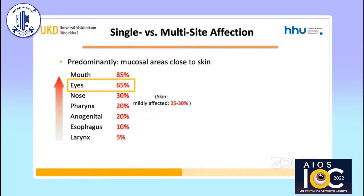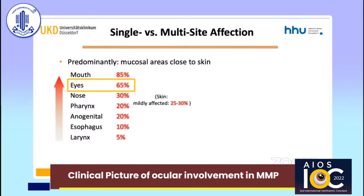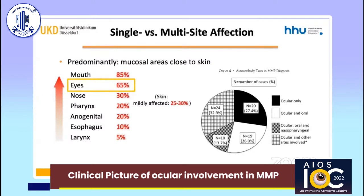Involved mucosal areas are generally in close contact with the skin. The skin itself is almost always only mildly affected. Oral involvement is most common, followed by ocular involvement in around 70%. Ocular involvement of MMP is considered high risk and comes along with a poorer prognosis. Around a quarter of the cases have ocular-only disease without involvement of any other site. It is important to note that this subgroup is significantly less likely to have a positive direct immunofluorescence result — around 50% of ocular-only cases are DIF-negative. In those cases, the diagnosis needs to be made clinically after differential diagnoses are ruled out.